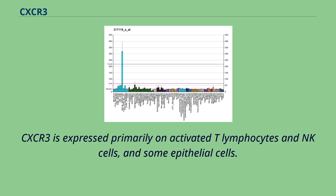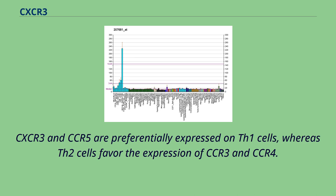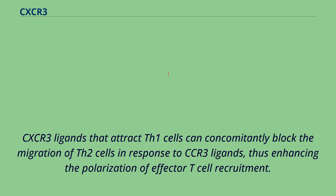CXCR3 is expressed primarily on activated T lymphocytes and NK cells and some epithelial cells. CXCR3 and CCR5 are preferentially expressed on Th1 cells, whereas Th2 cells favor the expression of CXCR3 and CCR4. CXCR3 ligands that attract Th1 cells can concomitantly block the migration of Th2 cells, thus enhancing the polarization of effector T cell recruitment.